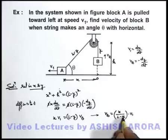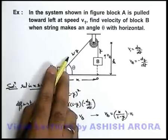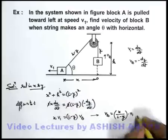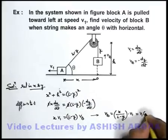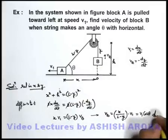Now in this expression x/(L - y), by using this triangle, here you can say x/(L - y) can be written as cos θ, so this will become v1 cos θ. So we are required to find the velocity with which block B is moving, that is v1 cos θ. This is our answer.